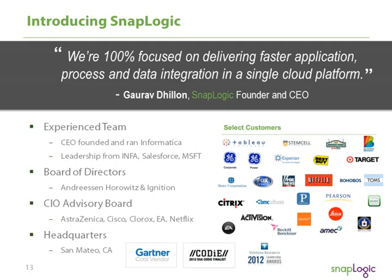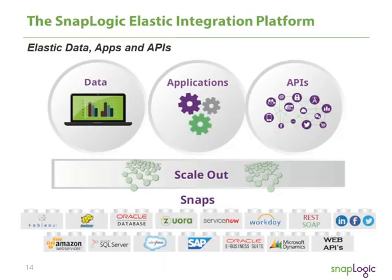We have a strong CIO advisory board and are venture-backed by Andreessen Horowitz and Ignition, with headquarters in San Mateo, California. What we're focusing on at SnapLogic is bringing together what have been fairly siloed approaches to integration — data, application, and API integration — delivered through a modern platform. You can see the three pillars of data, apps, and APIs, with a scale-out architecture and pre-built connectors called SNAPs — hence the name SnapLogic — which allow you to quickly snap in and snap out of different systems. We also have an SDK to build your own SNAPs.